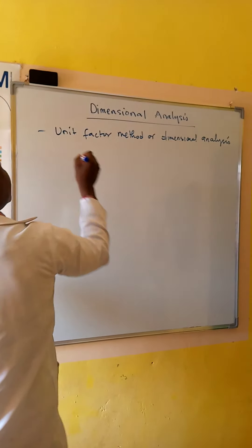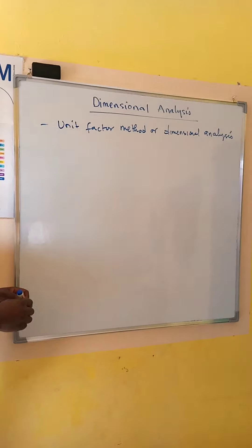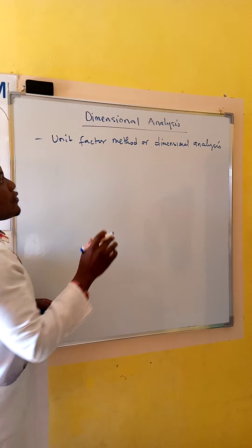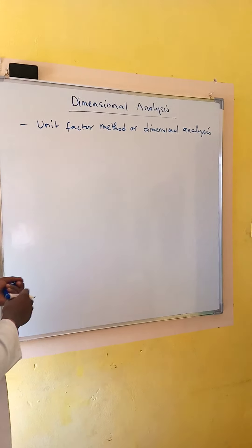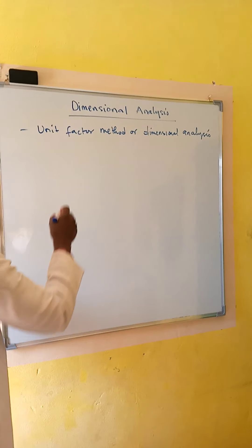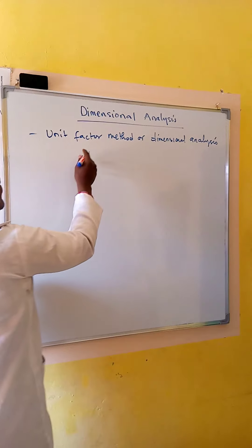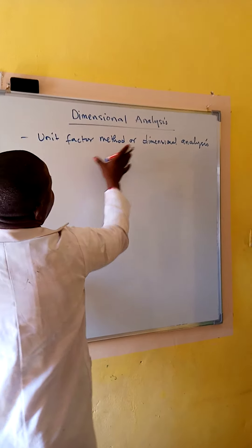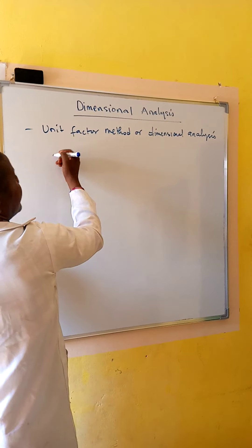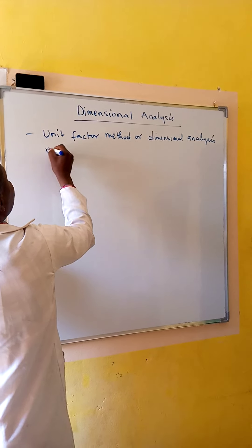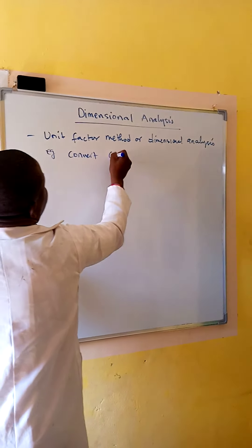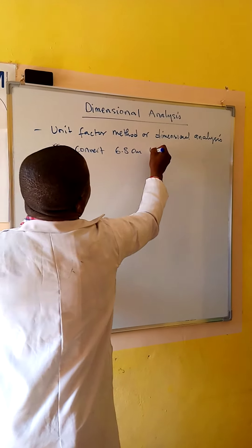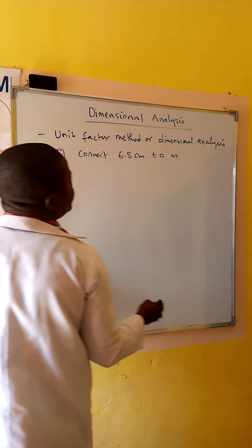In dimensional analysis, we simply look at the equivalence between the two units involved, or you come up with a valid relationship between the two units involved. For example, convert 6.8 centimeters to meters.